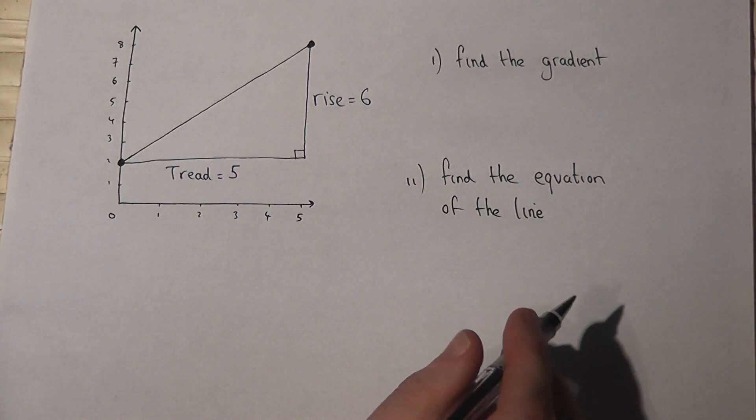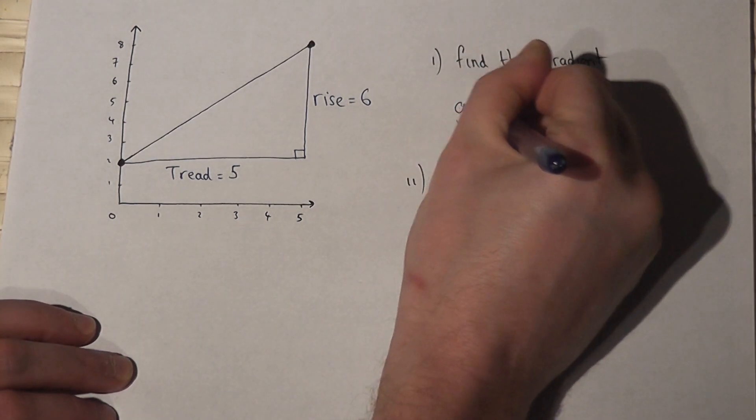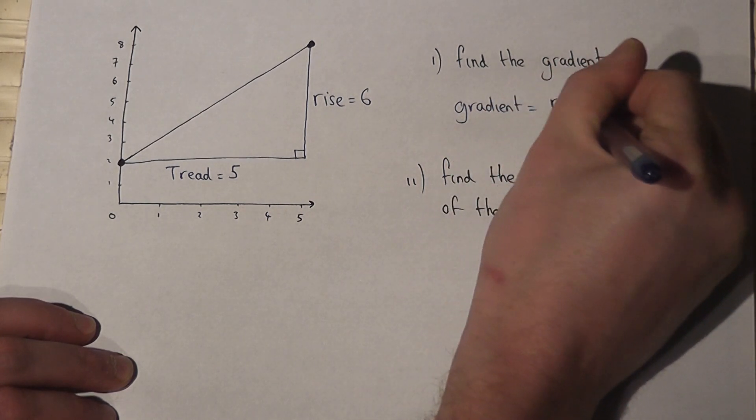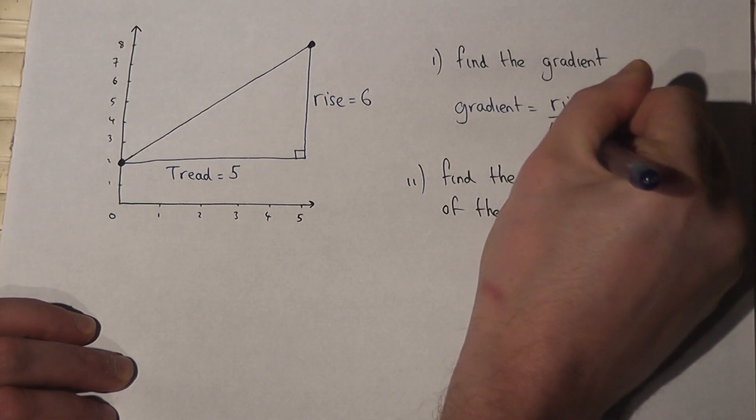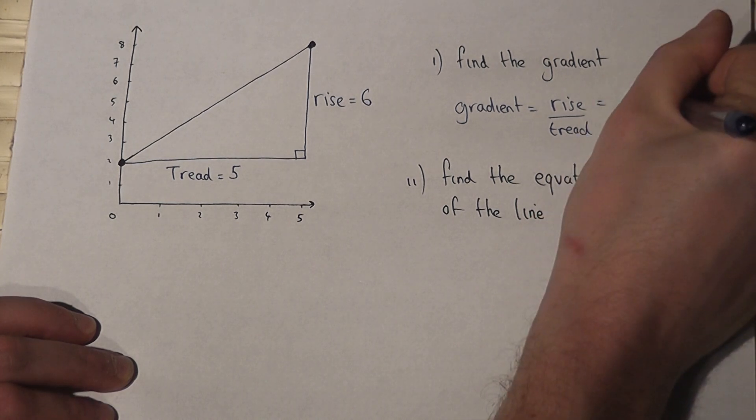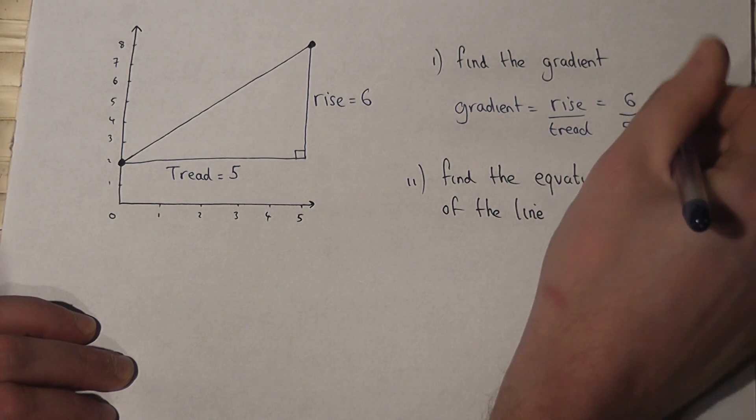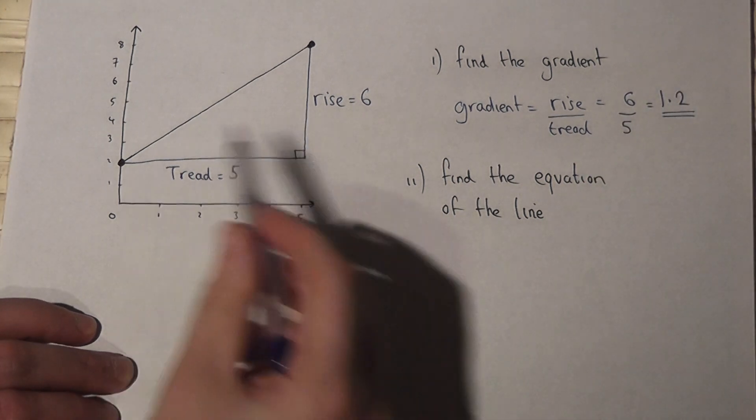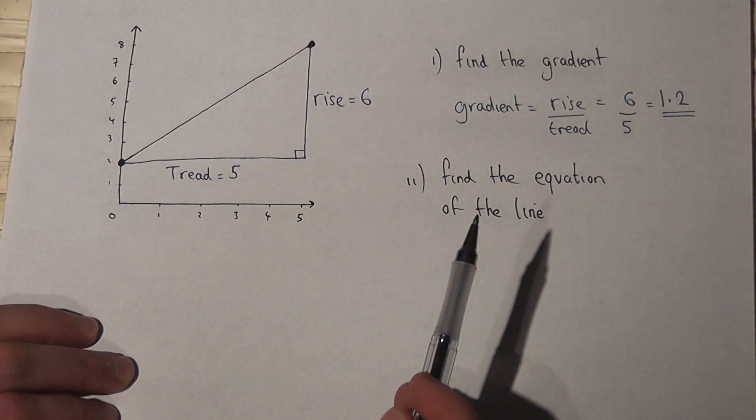Then, to find the gradient, we just work out the rise divided by the tread, which is 6 divided by 5, which is just 1.2. So this line has got a gradient of 1.2.